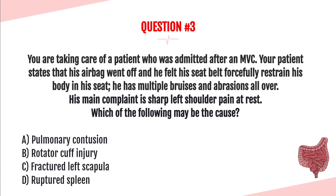Question number three. You are taking care of a patient admitted after an MVC. The patient states his airbag went off and he felt his seat belt forcefully restrain him. He has multiple bruises and abrasions all over, and his main complaint is sharp left shoulder pain at rest. Which of the following may be the cause? A. A pulmonary contusion. B. Rotator cuff injury. C. A fractured left scapula. Or D. A ruptured spleen.